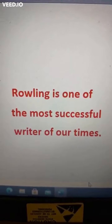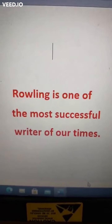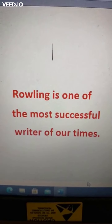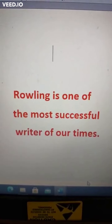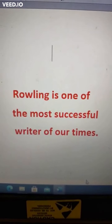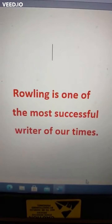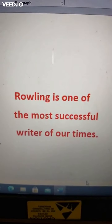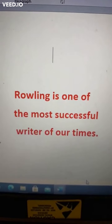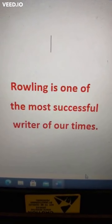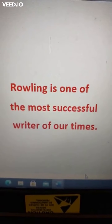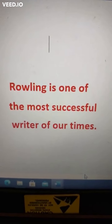Hi friends, good morning. This is our next question in correction of sentences. Look at this sentence: Rowling is one of the most successful writer of our times. Many successful writers are there, of which Rowling is one. So after 'one of', the noun must be plural. In place of 'writer', write 'writers': Rowling is one of the most successful writers of our times.